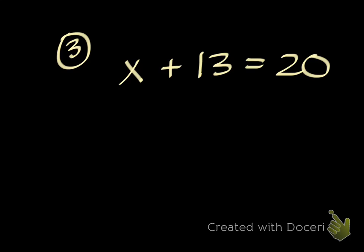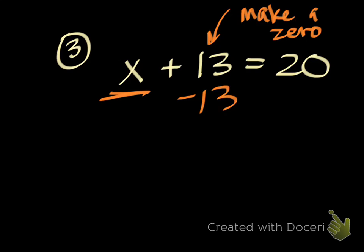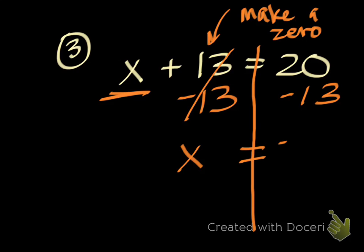Two more. Something plus 13 equals 20. If you know your addition facts at all, you know that number is 7. But let's do that with algebra. Make a 0 with your 13 there. Make a 0. 13 minus 13 will be 0. Do that on both sides of the equal sign. That's a 0 now. I have an x left over. And 20 minus 13 equals 7. Last one.